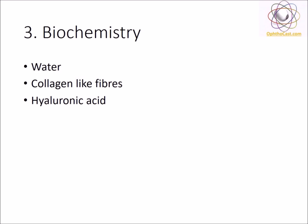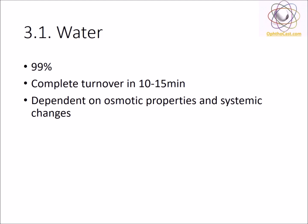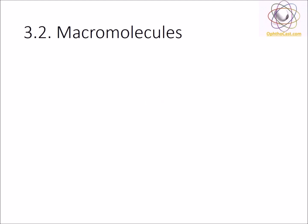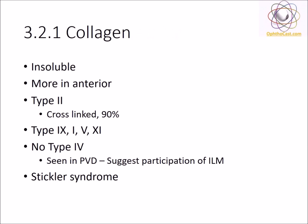Now let's go into the biochemical structure of the vitreous. Vitreous essentially contains three main components: water, collagen, and hyaluronic acid. 99% of the vitreous humor is formed by water. The entire water content is replenished and renewed every 15 to 20 minutes and is highly influenced by the systemic circulation. The vitreous collagen is insoluble. Type 2 is the largest component being 90% of collagen, followed by types 1, 5, 9, and 11.